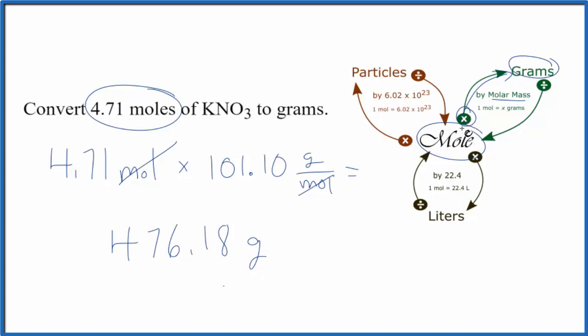So this table is kind of helpful here. We have moles in the center, and any time we go from moles to another unit, we use the conversion factor. We always multiply by that conversion factor. If we're going from those other units to moles, we're going to divide.